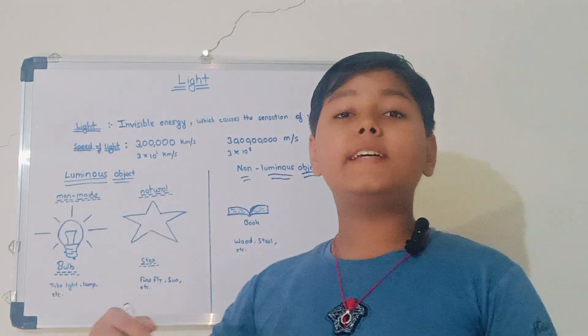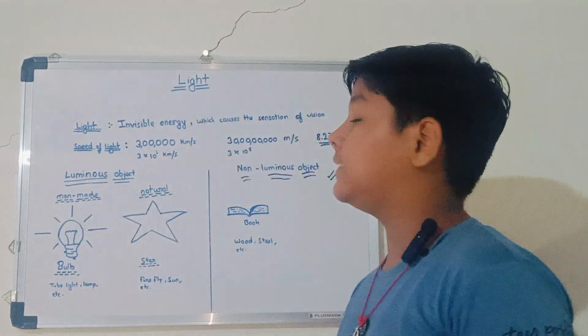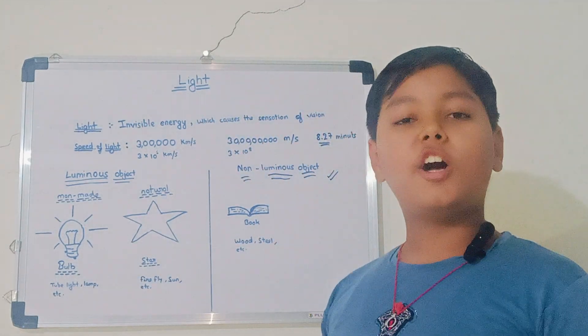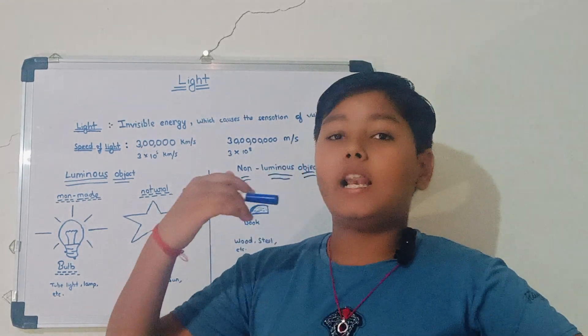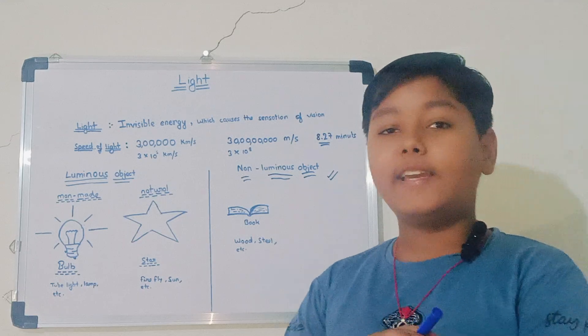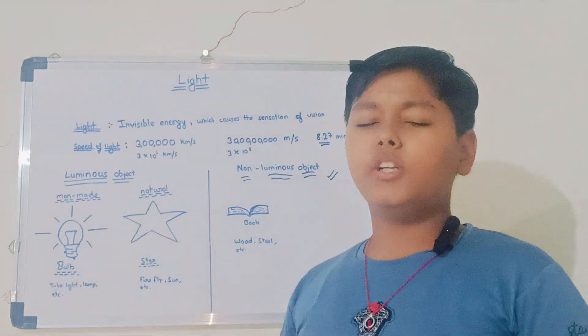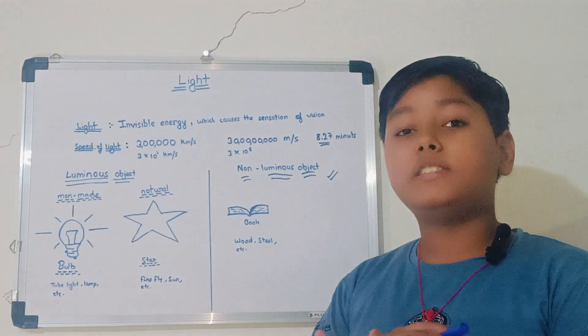So what is light? Light is an invisible energy which causes the sensation of vision. Means light is a thing that we cannot see, but without light we cannot see anything.